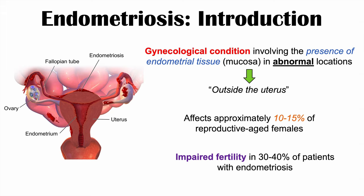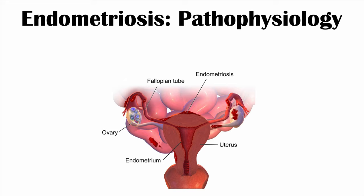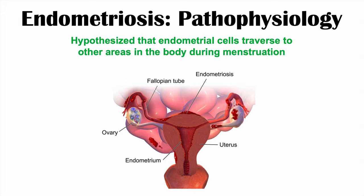So what is the pathophysiology of endometriosis? We talked about the endometrial tissue being in places where it should not be, but why does this happen? It's hypothesized that endometrial cells travel to other areas of the body during menstruation. When the endometrium is sloughed off, it is believed that cells escape and go to other locations, including the surrounding areas of the pelvis, the fallopian tubes, the ovaries, and other places in the body.